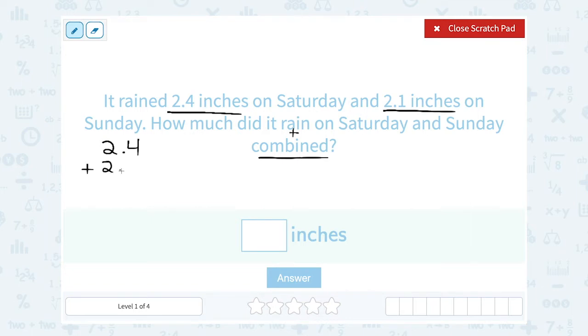Notice I'm lining these numbers up so that the decimal points are lined up with each other. I'm also going to line the decimal point up in my answer, and that helps make sure that I'm adding numbers that are in the same place value. So in the tenths place, 4 plus 1 gives me 5. And in the ones place, 2 plus 2 gives me 4. So all together, it rained 4.5 inches over the weekend.